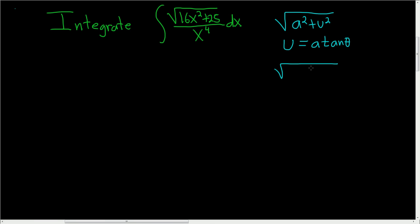So let's rewrite this as follows as 4x quantity squared plus 5 squared. And now we can see that u is equal to 4x and a is equal to 5. So our substitution will be 4x equals 5 tangent theta. Now at some point we're going to have to plug in our x here, so I'm going to go ahead and solve this for x. So x is equal to 5 over 4 tangent of theta.